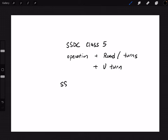For SSDC, I believe there is only one mobile crane, number 201. For PCDC — Pan Country Driving Center — it's the 300-over series. For SSDC there's only one, and that was the only one available during my time.